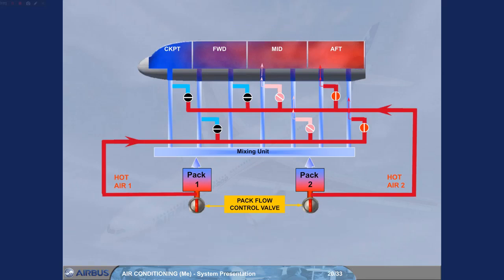In the example shown, no hot air is being added to the cockpit in the forward cabin zone. Some hot air is being added to the mid cabin zone, and a lot of hot air is being added to the aft cabin zone.